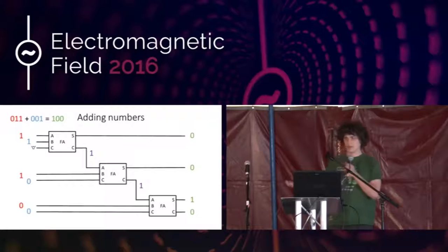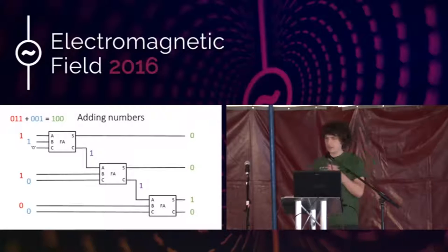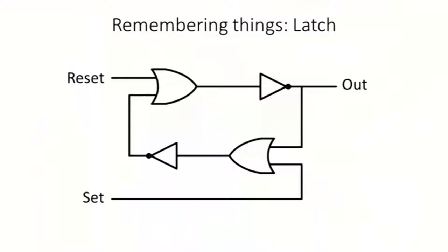We've gone from transistors to being able to add numbers, but now if we do a calculation, it would be nice to store the result. For that we need memory, and the simplest form is called a latch. It has two inputs — reset and set — and one output. When you make the reset pin high, the output becomes 0; when you make the set pin high, the output becomes 1; and when you make both pins low again, it will remember whatever value you put in there.